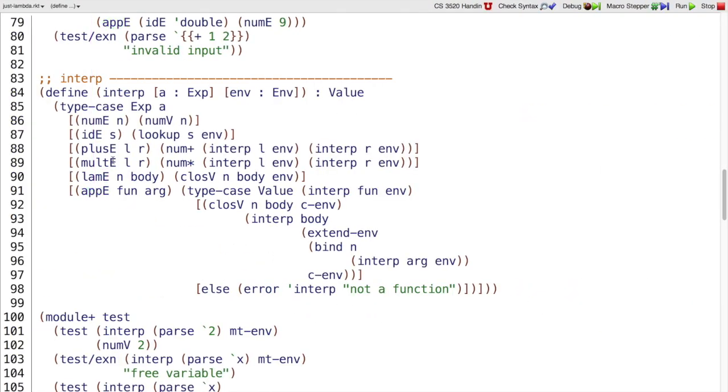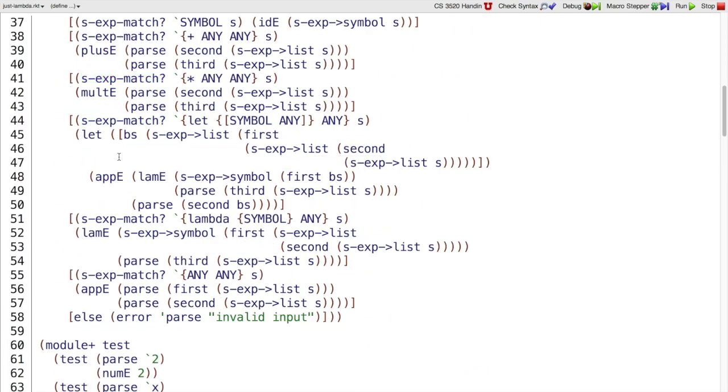We end up with an interpreter like this. There's no let e in the interpreter. There is still a case in the parser that matches let, but it takes those three pieces and puts them together in a different way to generate just lam e and app e, which are handled by the interpreter.